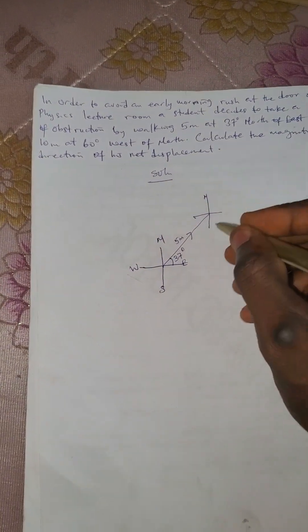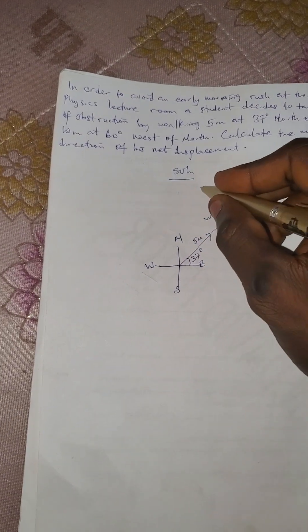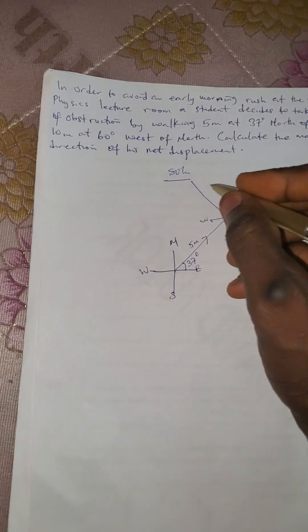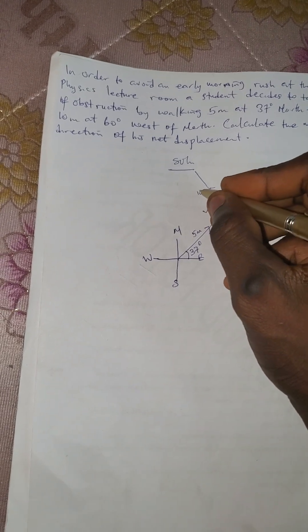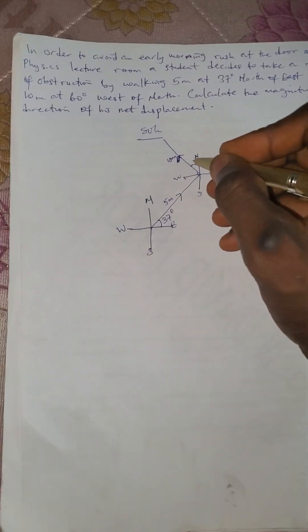West of north — don't forget we have north, south, east, and west. West of north means the angle is between west and north, so this 10-meter vector moves like this. It's going to end at the north, so this is the north direction, and we have 60 degrees here — 60 degrees west of north.